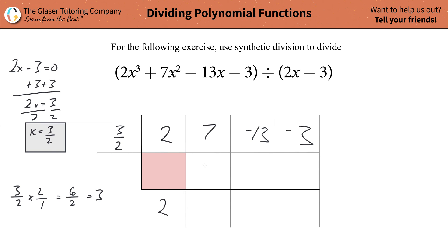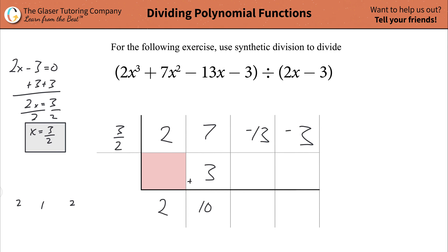Plug in 3 in the next adjacent column, then simply add — you're always going to add the column together, so that becomes a total of 10. Now repeat the procedure: take this number and multiply it by 3/2. So 3 halves times 10 over 1 gives 30 over 2, and half of 30 is 15. Plug in 15, add it together: negative 13 plus 15 is positive 2.